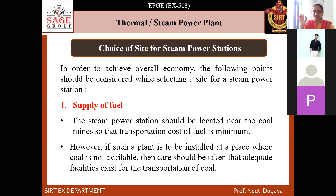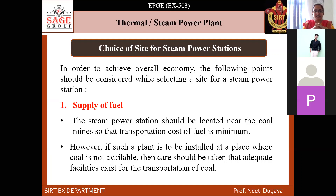The choice of site selection is very important for all power stations. We have six major points to consider while selecting a location for the steam power station. In order to achieve overall economy, the following points should be considered. Number one is supply of fuel, which is the foremost and most important point.